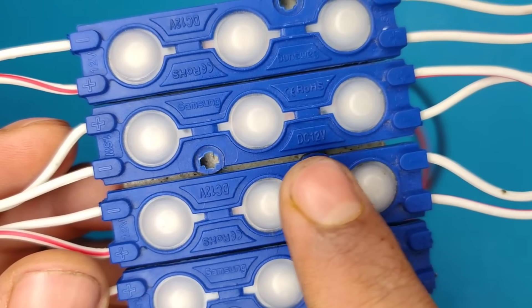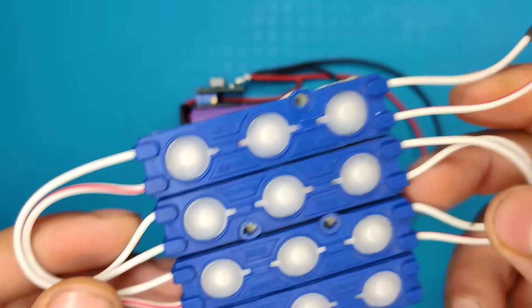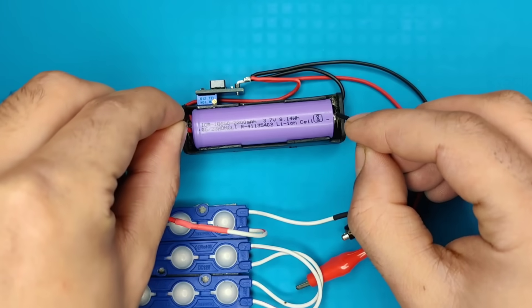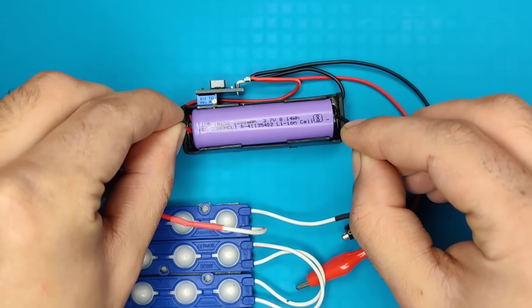In first test, I will use this 12 volt LED module. And if we directly connect with this 3.7 volt battery, it will not glow up as the voltage is very low.